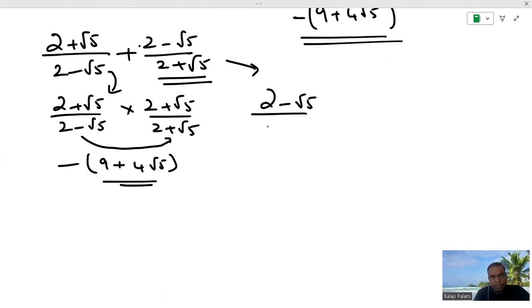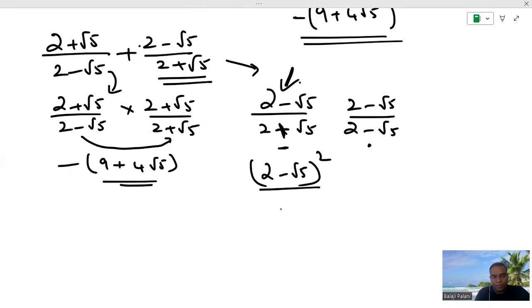Here, 2 minus root 5 by 2 plus root 5. The order of the fraction, signs are interchanged. Now, only see the sign in the denominator. So you have to write minus. The same thing in the numerator also. Now, I am going to write the numerator and the denominator. So only based on the sign present here, you are going to introduce the opposite sign. If I solve this, 2 minus root 5 whole square in the numerator by 4 minus 5 in the denominator.